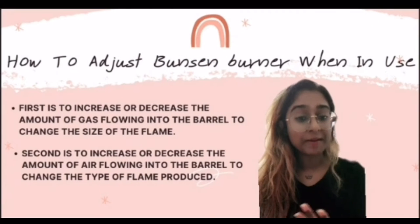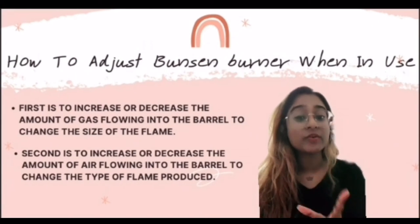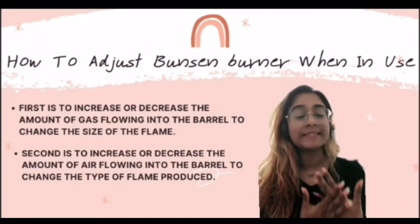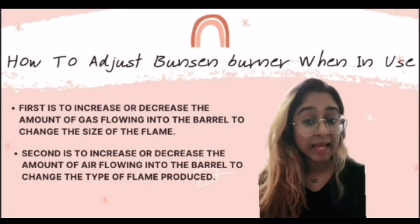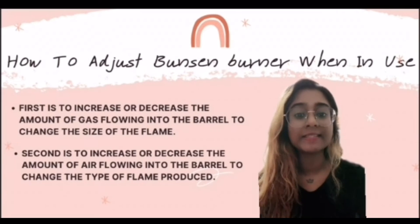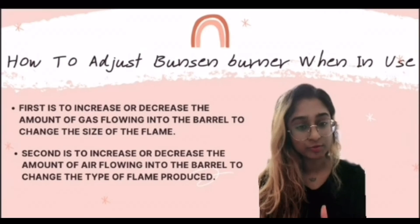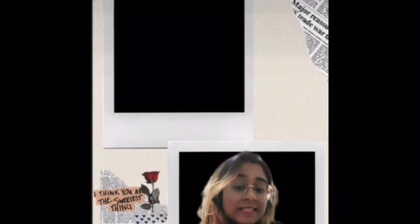It is also important to know how to adjust a Bunsen burner when in use. Firstly, increase or decrease the amount of gas flowing into the barrel to change the size of the flame. Secondly, increase or decrease the amount of air flowing into the barrel to change the type of flame produced.